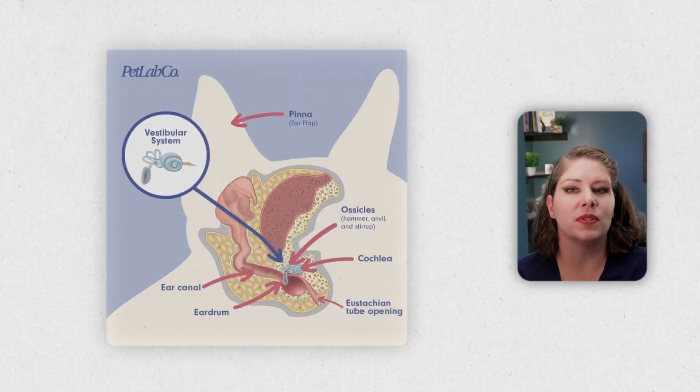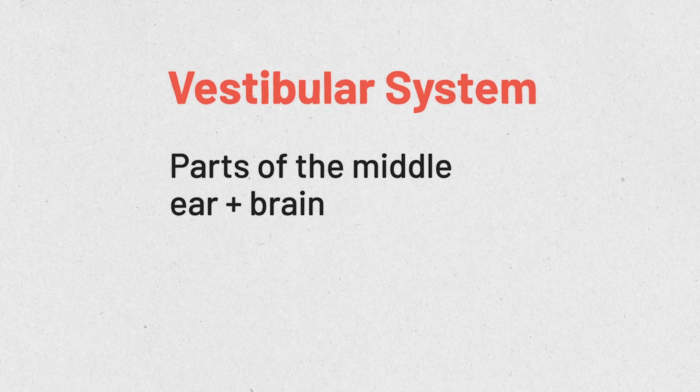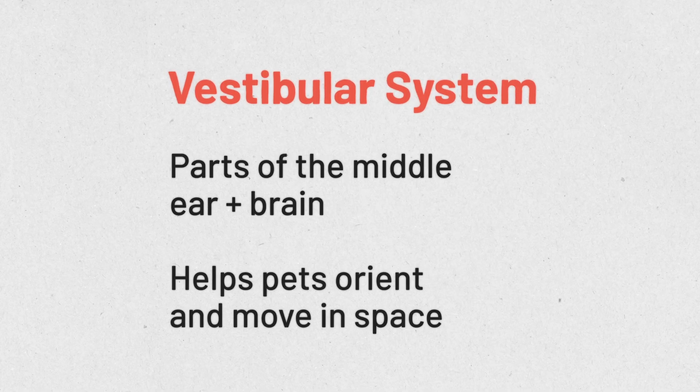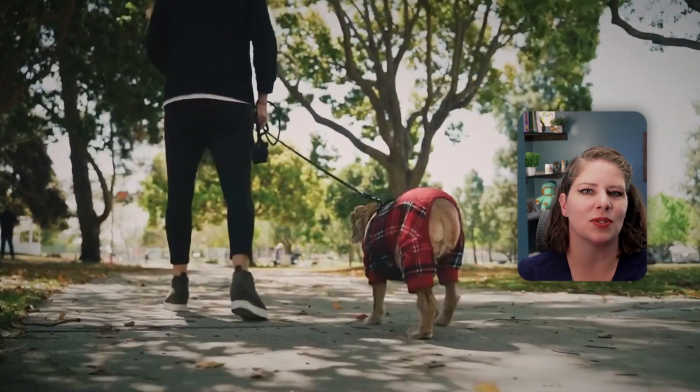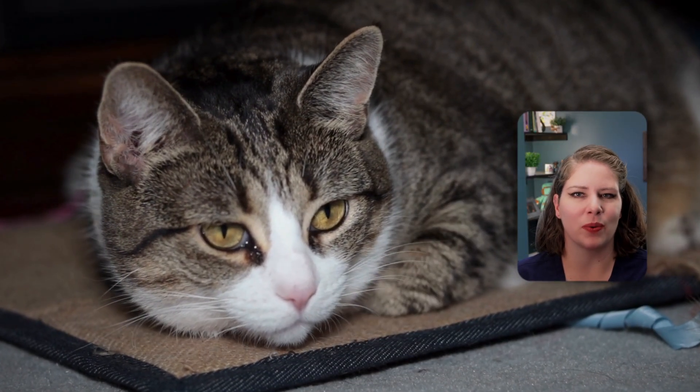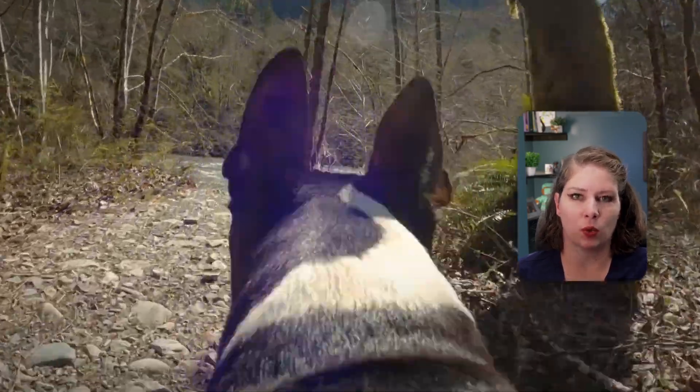In order to understand what vestibular disease is, first you need to know about the vestibular system, also known as the vestibular apparatus. It's essentially different parts of the middle ear and the brain that help your dog and cat with moving their body and orienting their body in space. It's what allows our pets and ourselves to walk or run even when the ground is quite uneven or a little bit unstable, to watch objects in motion without getting dizzy, and to right themselves. The fact that we're able to do all of these things is remarkable and truly amazing.